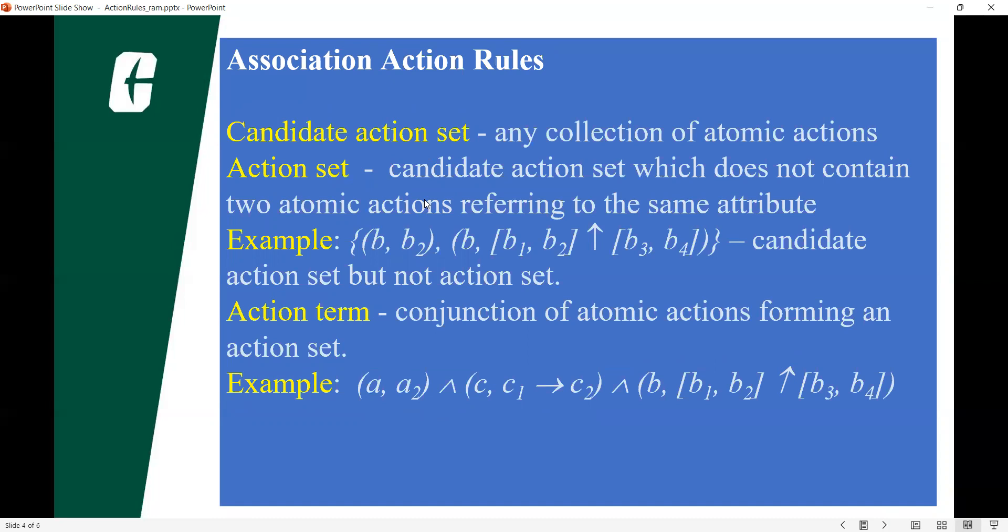In association rule action set, we can see similarities like candidate action set. When it comes to atomic actions and action set, a candidate action set does not contain two atomic actions referring to the same attribute.